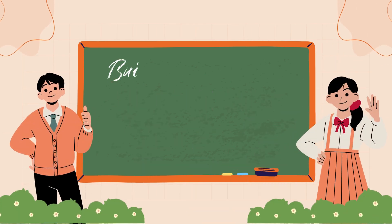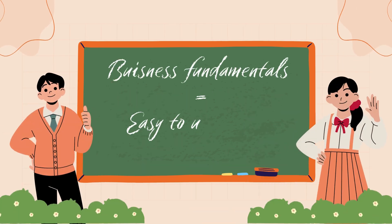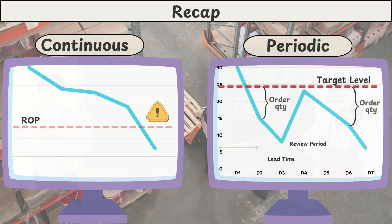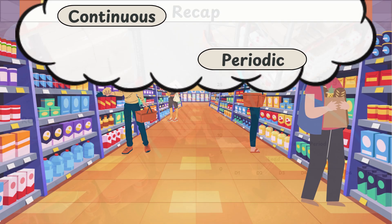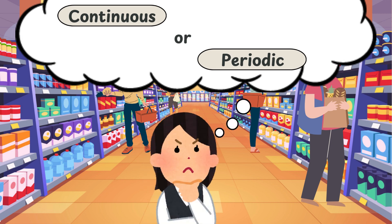Hi everyone, welcome back to our channel where we break down business fundamentals into easy to understand concepts. In our last video, we discussed two inventory control policies: continuous review policy and periodic review policy. We also saw how we could use these methods to reduce stockouts, manage orders effectively, and boost customer satisfaction. But that video did not answer questions like which product should use continuous inventory, which should use periodic inventory, and how we should choose the service level for each item.